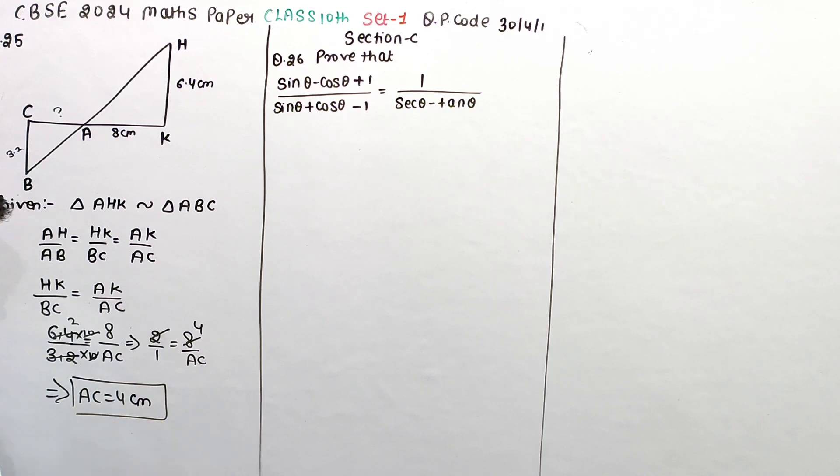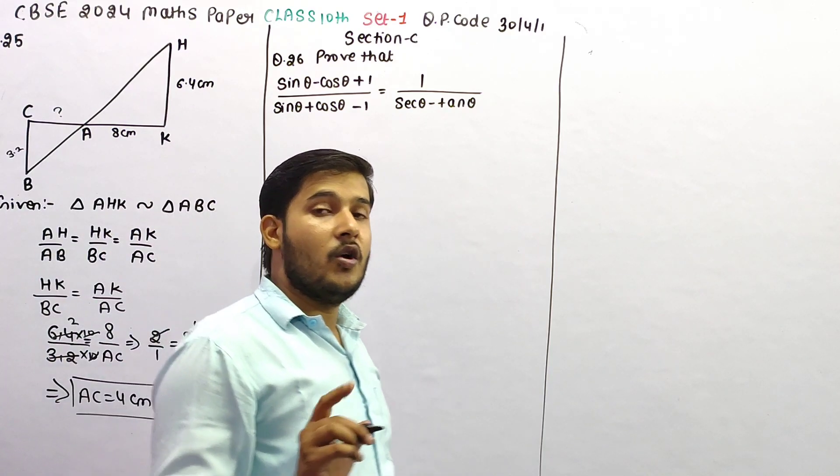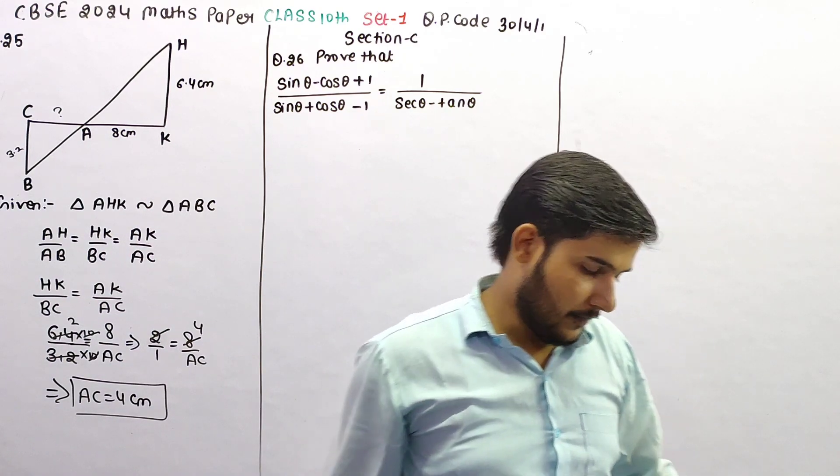So for the similar triangles that were given, we simply write their sides in proportion, and then we can find AC.